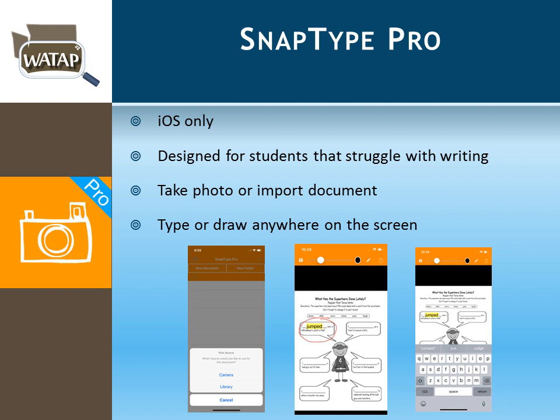Snap Type Pro is an iOS-only app designed for individuals who struggle with the physical aspect of writing. Students can take a photo or import a document, then draw, type, or handwrite anywhere on that document on the tablet screen, and save it for later access.